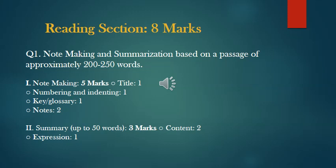The marks distribution for note making is: Title — 1 mark; Numbering and indenting — 1 mark (half mark for each). Sometimes students just make dots, but if you use a star or hash instead of proper numbering, you will not be awarded marks and will lose marks for both numbering and indenting. Key glossary — meaning key to symbols and abbreviations — requires a proper box to be made. Notes carry 2 marks. Numbering and indenting must be taken care of.